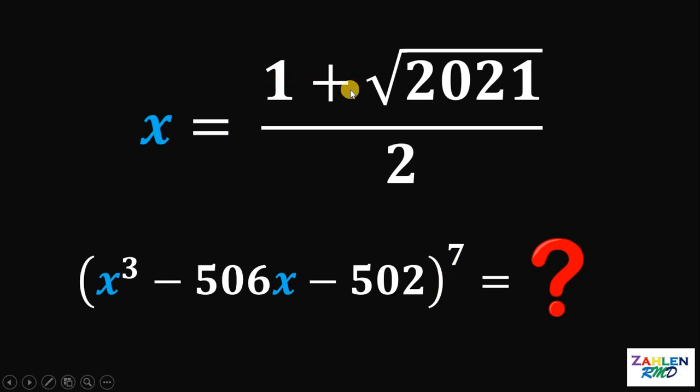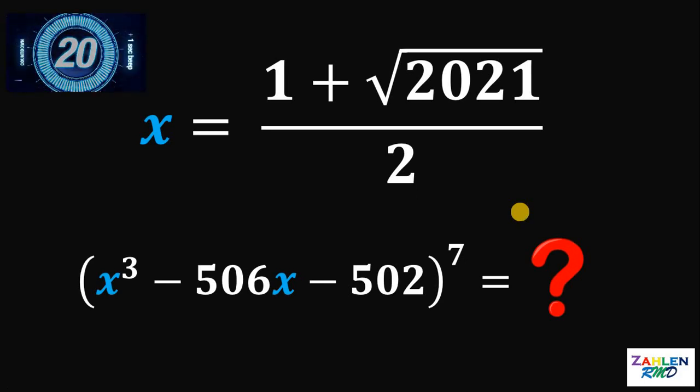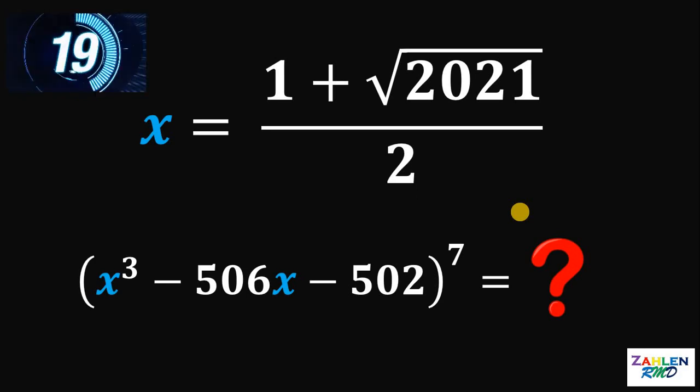x equals 1 plus square root of 2021 all over 2. Now, if you want to try this problem, just pause this video. We have 20 seconds and timer starts now.